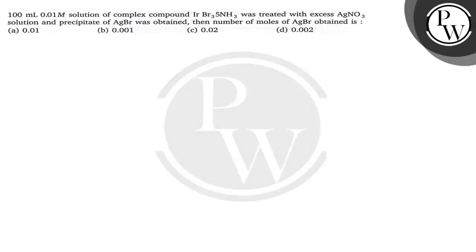Hello, let us see this question. 100 ml of 0.01 molar solution of complex compound iridium Ir Br₃ 5NH₃ was treated with excess AgNO₃ solution and precipitate of AgBr was obtained. Then the number of moles of AgBr obtained is